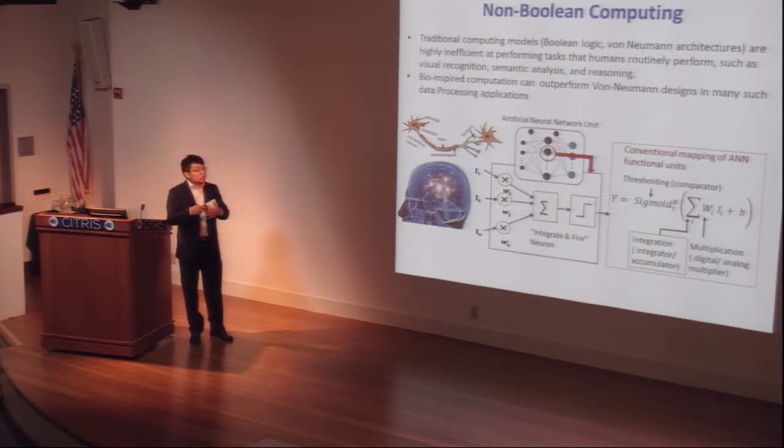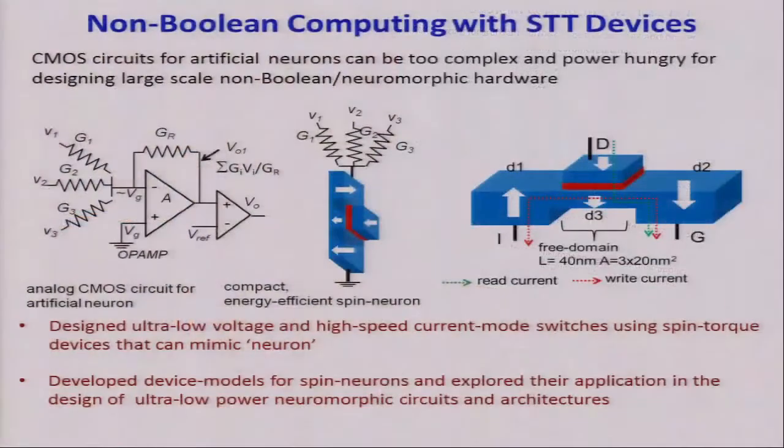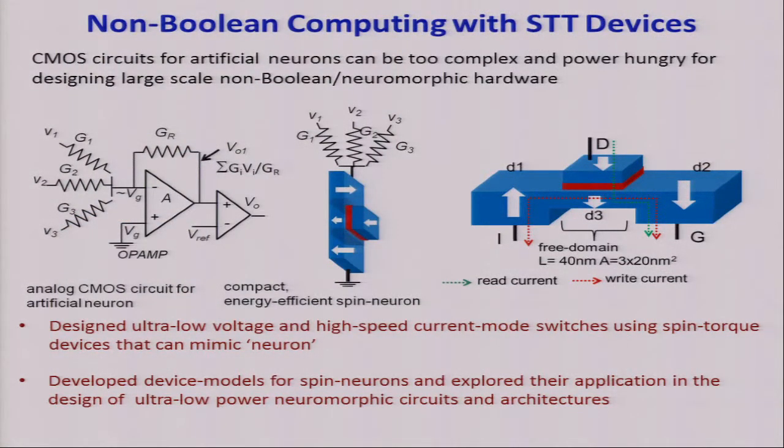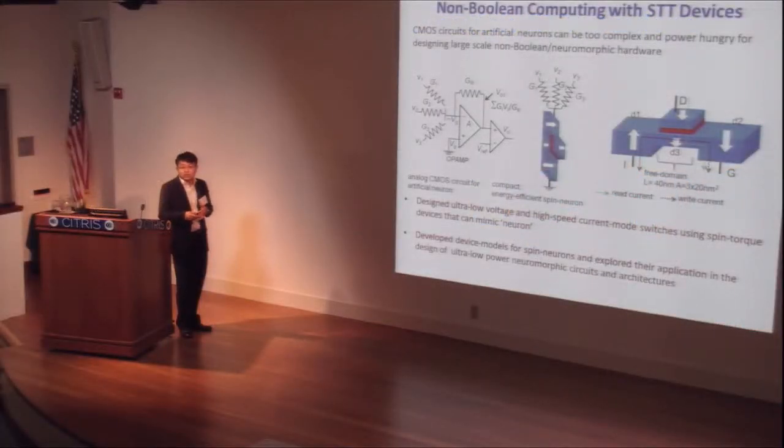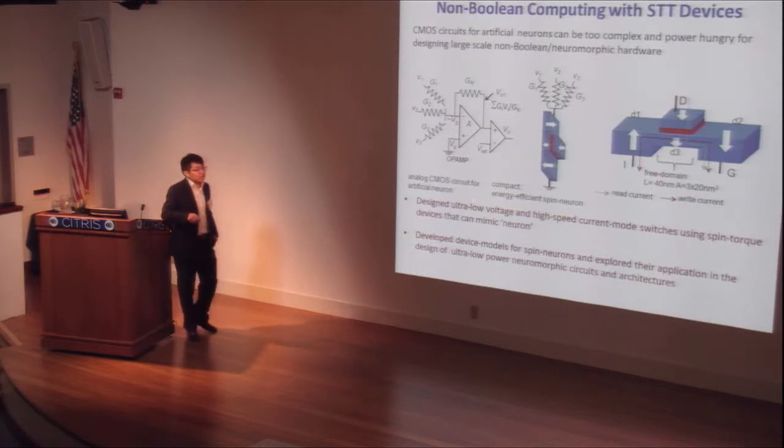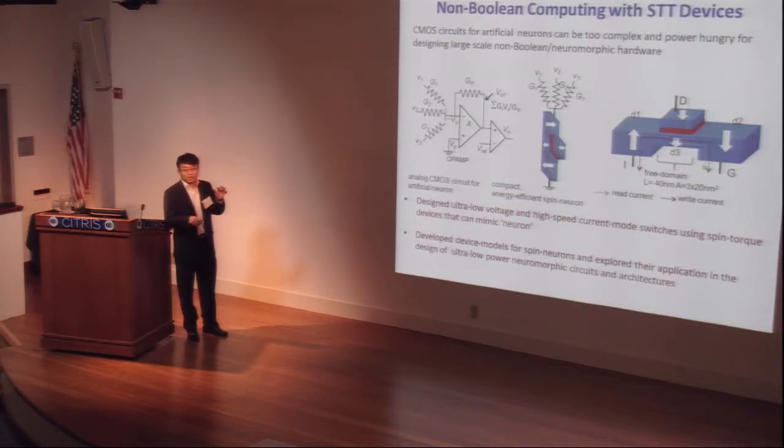Our job is to use spin devices to model this artificial neural network. The artificial neural network can be implemented in CMOS circuits, of course. But this is a very simple example of analog CMOS circuits for the artificial neuron, which in the first stage contains an operational amplifier that takes care of all the inputs. In the second stage, it has a comparator which will compare with the threshold of the neuron. We find it's very complex and power-hungry if we apply it to a large-scale neural network. So we propose this ultra-low voltage and high-speed current comparator using spin-torque devices that can mimic the functionality of brain neurons.